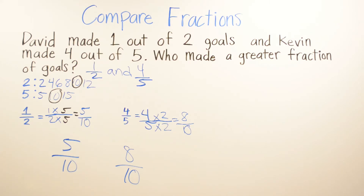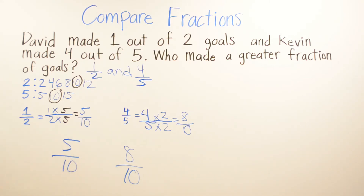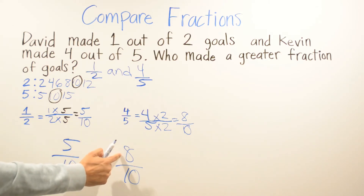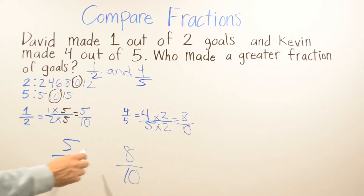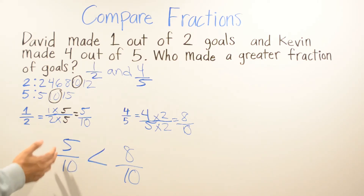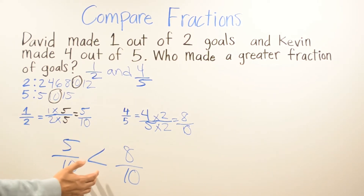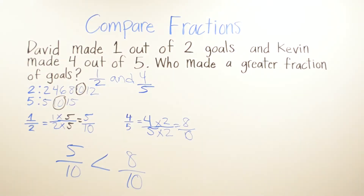Now I have five tenths and eight tenths. We can use greater than, less than, or equal to. Since eight tenths is bigger than five tenths, we write the arrow facing that way: five tenths is less than eight tenths.